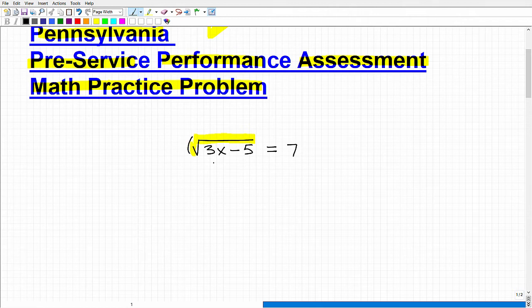Let's go ahead and square both sides of this equation. So when we do this, I'm going to get 3x minus 5. And that's going to be equal to 7 squared or 49.